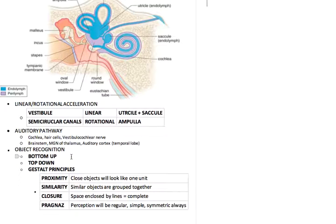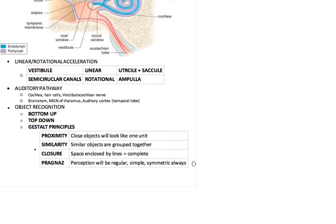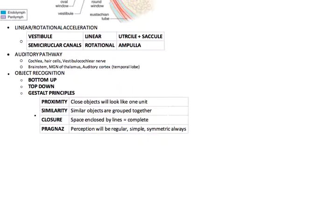Object recognition. There's bottom-up, and then there's top-down. Bottom-up is data-driven, and top-down is generalizing. Proximity is when close objects will look like one unit. These are gestalt principles. Similarity is similar objects are grouped together. Closure is space enclosed by lines, you call it complete picture. Pragnanz is perception will be regular, simple, and symmetric.